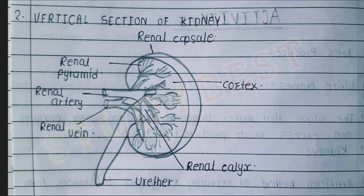The second section shows only the kidney parts. The labels are: renal capsule, renal pyramid, renal artery, renal vein, cortex, renal calyx, and urethra.